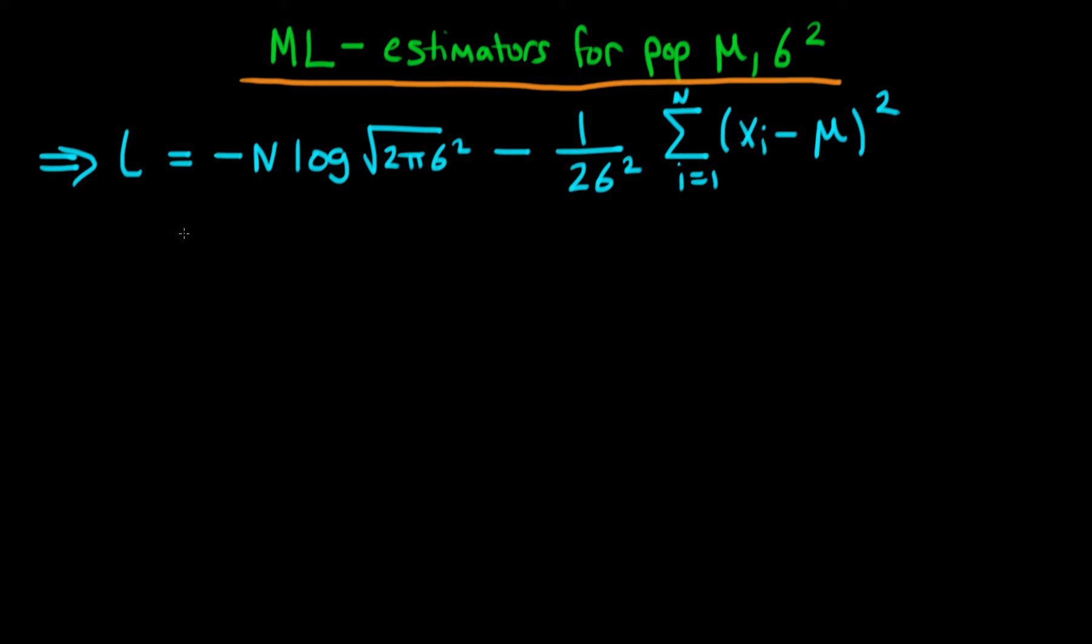And we can actually simplify this a little bit further by noting that the square root of 2π sigma squared is just the same as 2π times sigma squared all to the power half. And then we can just use our ordinary log rules here to write this as minus n over 2 times the log of 2π.